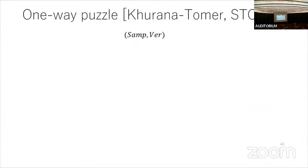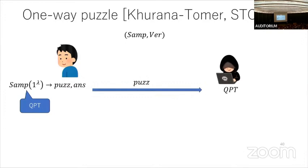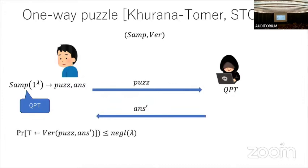I also explain one-way puzzles, introduced by Kretschmer and Toma. This consists of a sampling algorithm and a verification algorithm. The challenger runs the QPT sampling algorithm to get a classical bit string puzzle and answer, sends the puzzle to the QPT adversary, who must output a solution. The challenger runs the verification algorithm — which is unbounded, not necessarily QPT — and accepts or rejects. Security means the probability of acceptance is negligible. This is another quantum version of a one-way function.